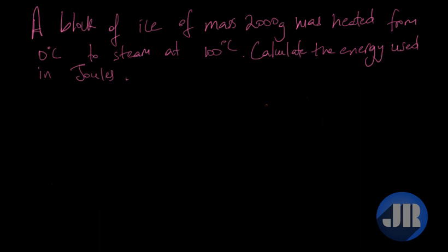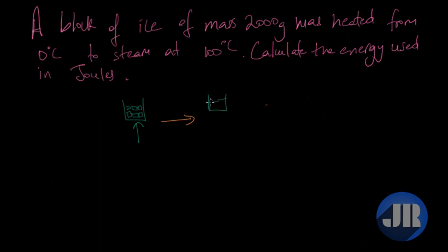First, I'll do a sketch of exactly what took place. We have a container with some cubes of ice inside, and we apply a heat source. As we begin to apply heat to the ice, it starts to melt — we no longer have ice, we have water. We continue to heat it because the question says it was heated from ice to steam, so the liquid evaporates and gives us steam.